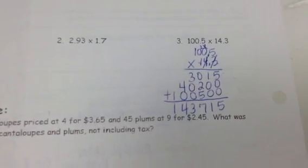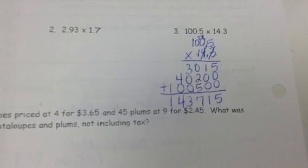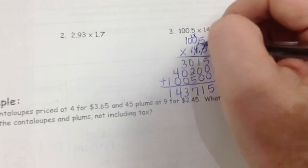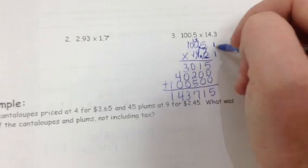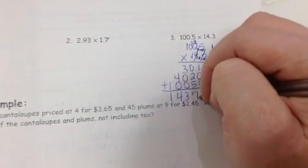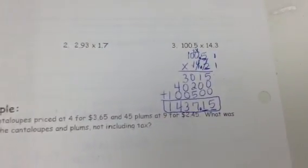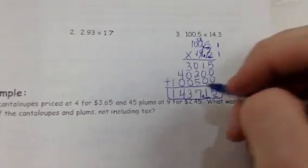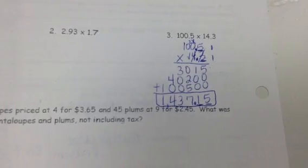So I have this big long number, 1, 4, 3, 7, 1, 5. But my final step is putting our decimal in. So we count. There was one number right here behind the decimal. There is one number here behind this decimal. So I need two total numbers. Add those together. There's two to be in my product. 1, 2. And I'm done. So instead of this answer being 143,715, it's actually only 1,000. And you can put the comma if you want, 1,437 and 15 hundredths.